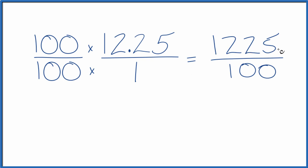So 1,225 divided by 25, that equals 49. And then 100 divided by 25 is 4.